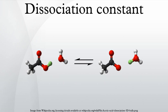Protein ligand binding: the dissociation constant is commonly used to describe the affinity between a ligand and a protein, that is how tightly a ligand binds to a particular protein.